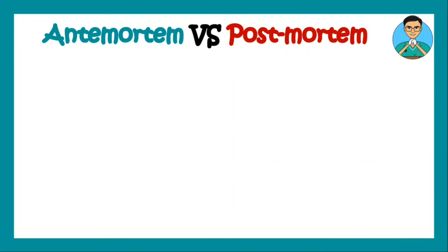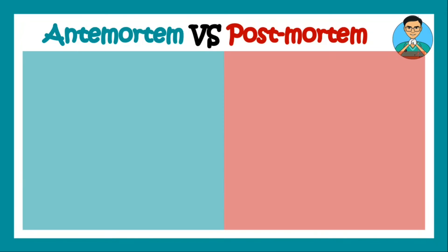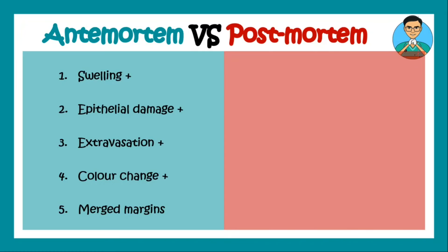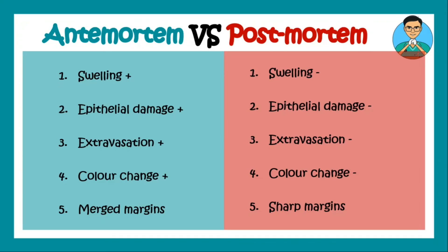It is very important to know whether a bruise is antemortem or postmortem — that is, the time of infliction of the bruise. Antemortem bruises have swelling, are associated with epithelial damage, extravasation of blood is present, colour change occurs, and margins are irregular. Whereas in postmortem bruising there is no swelling, no epithelial damage, no extravasation of blood, colour change does not occur, and the margins are very sharp.